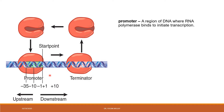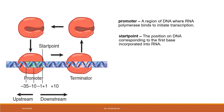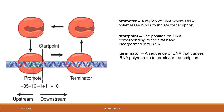Here are a few key terminologies. The promoter is the region present on the DNA where RNA polymerase binds to initiate transcription. The start point is the position on the DNA which corresponds to the addition of the first ribonucleotide on the RNA transcript. The terminator is a sequence present on the DNA which causes the RNA polymerase to dissociate from the DNA, resulting in the termination of transcription.